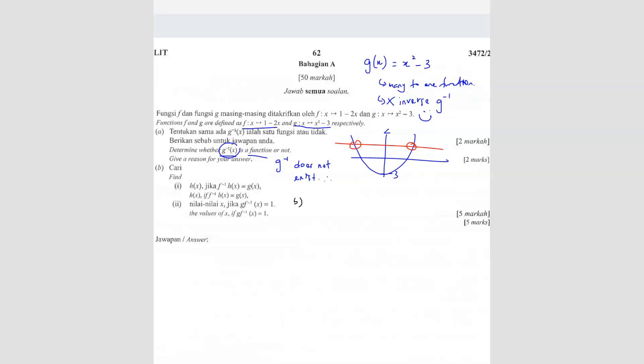Now question B. Question B is asking find h(x) if f⁻¹(h(x)) = g(x). What you can do is substitute h(x) into the f inverse, or you can add a forward function here. I just added a forward function here. I have to add both sides. Why am I doing this? Because when you have a forward and inverse together, it will neutralize it. So there is no more f inverse there.